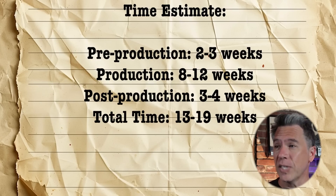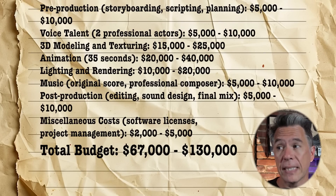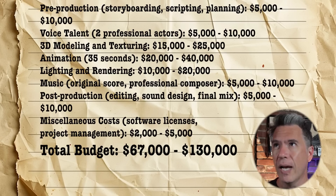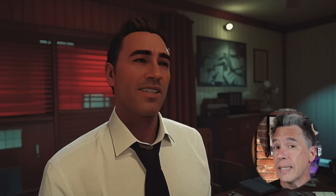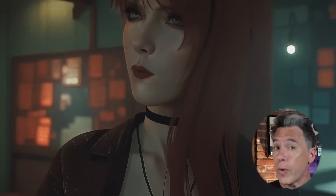Based on ChatGPT estimates for a 35-second animated film with two actors, one location, and two exterior shots: at top-tier Hollywood 3D animation level, the budget would run between $150,000 and $295,000 with a production time of 13 to 19 weeks. At a smaller-scale 3D animation studio level, the estimate was $67,000 to $830,000, with a time estimate of 10 to 14 weeks. I'll push back a little — I do think a top-tier studio could pull off 35 seconds faster — but the comparison is still striking.